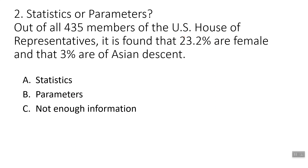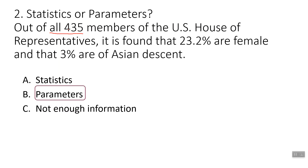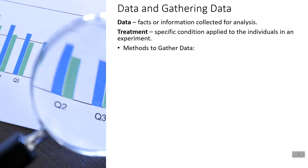Next example — statistics or parameters? Out of all 435 members of the U.S. House of Representatives, it is found that 23.2 percent are female and that three percent are of Asian descent, both of which are an all-time high. The key phrase is 'out of all 435 members' — there are a total of 435 members in the U.S. House of Representatives, and this is out of all of them. So that's our population, and when we get information about a population, that means these two numbers are parameters.